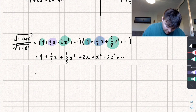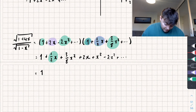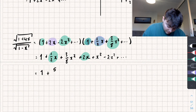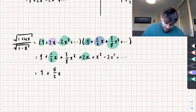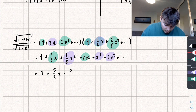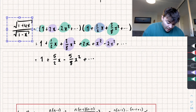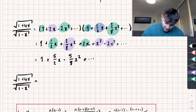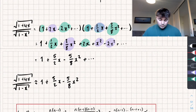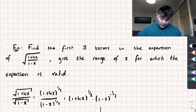Collecting like terms: the x terms give (1/2)x + 2x = (5/2)x. The x² terms: (3/8)x² + x² - 2x² = (3/8 - 1) = -5/8x². So the first three terms are approximately 1 + (5/2)x - (5/8)x².